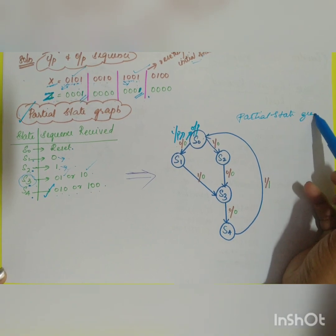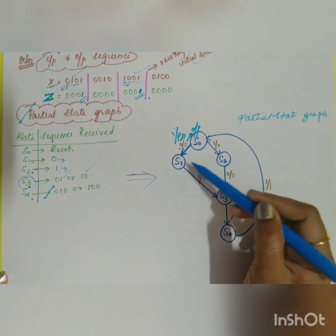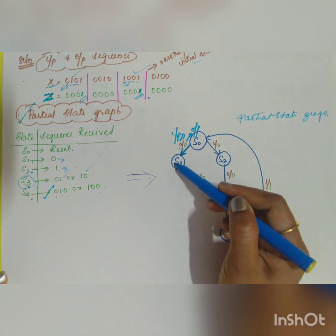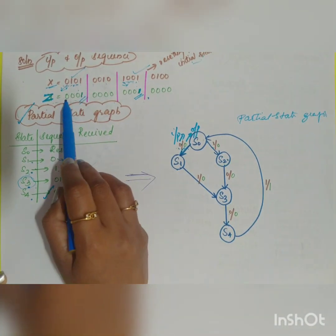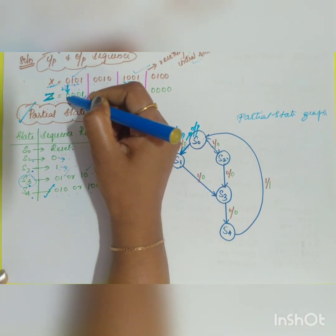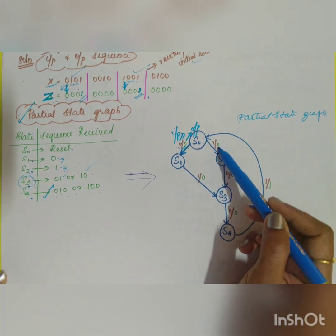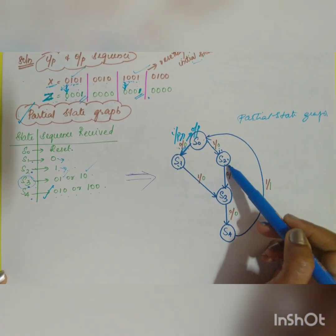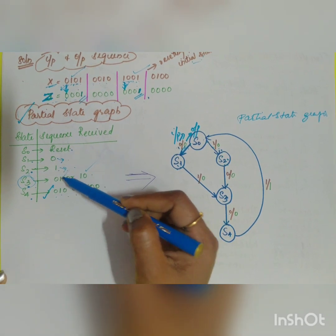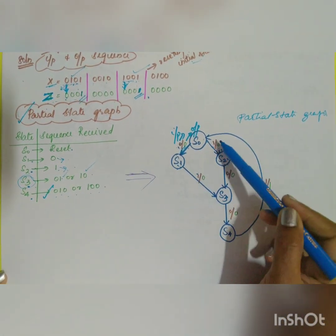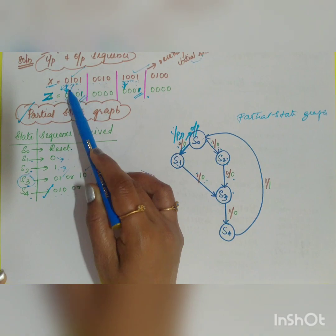For the partial state graph: starting at S0, if input=0 it goes to S1, if input=1 it goes to S2. From S0 the output for input 0 is 0, and for input 1 is also 0. From S1 and S2, inputs 01 or 10 lead to S3, with corresponding outputs equal to 0.